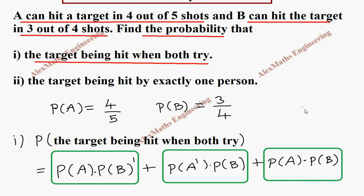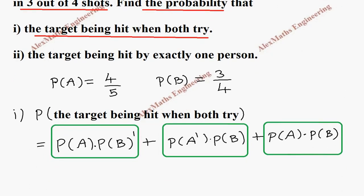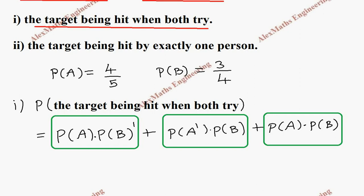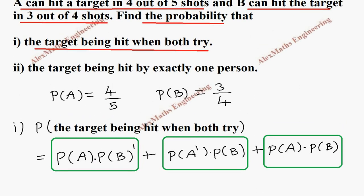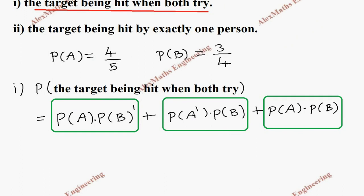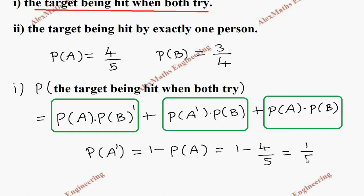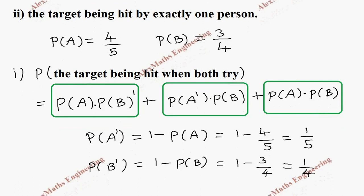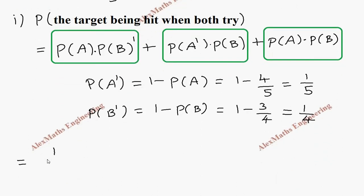Under these three cases the target is being hit: the first case, second case, and third case. The only case where the target is not hit is when both miss. We already have P(A) = 4/5 and P(B) = 3/4. Now P(A') = 1 − P(A) = 1 − 4/5 = 1/5, and P(B') = 1 − 3/4 = 1/4.